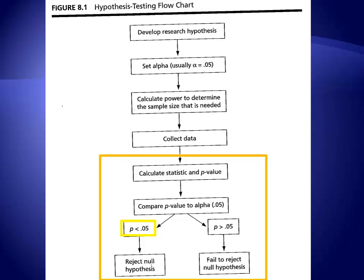If your p-value is less than 0.05, it means that there is less than a 5% probability that your test statistic would be that large. You can then reject the null hypothesis and infer that it is unlikely that a null relationship exists between the variables in your model.